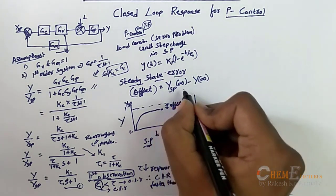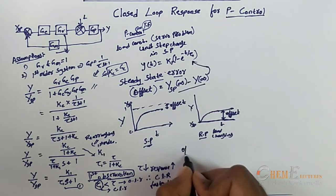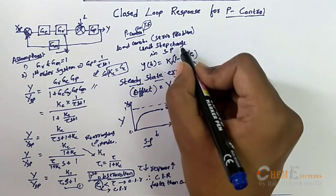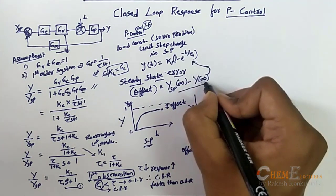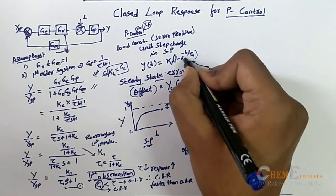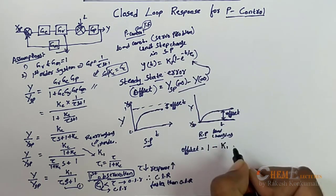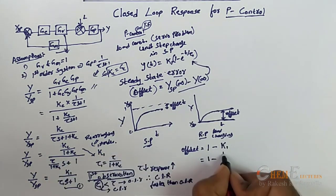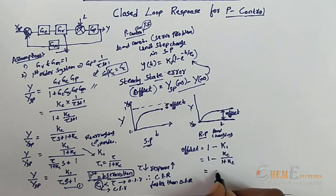Applying this offset formula for the P-controller with a unit step change in setpoint: the final value of setpoint is 1. Substituting t = ∞, e^(-∞) = 0, so Y(∞) = K1. Therefore offset = 1 - K1 = 1 - Kc/(1 + Kc) = 1/(1 + Kc).